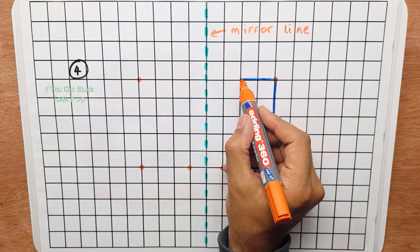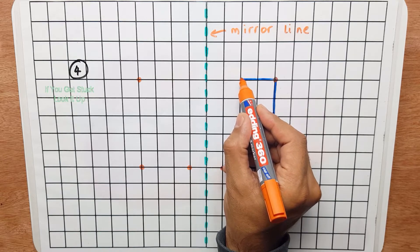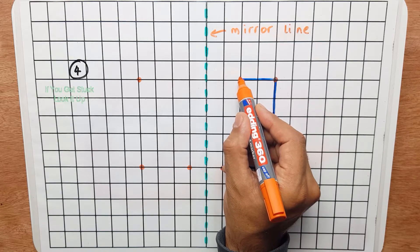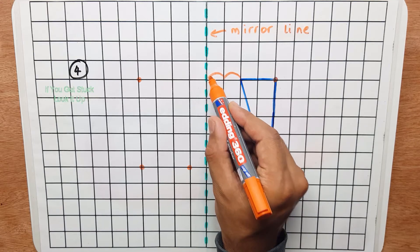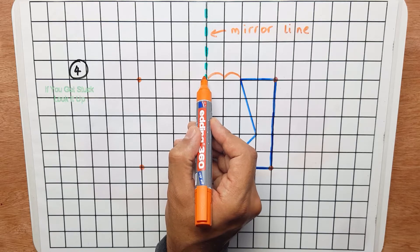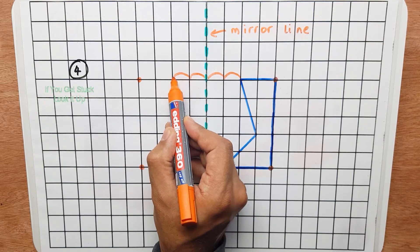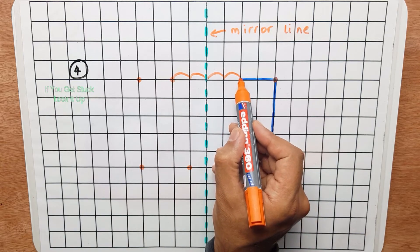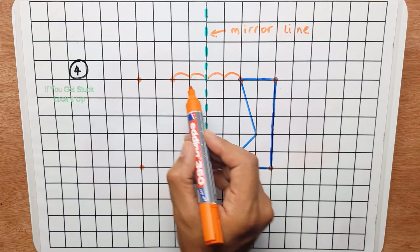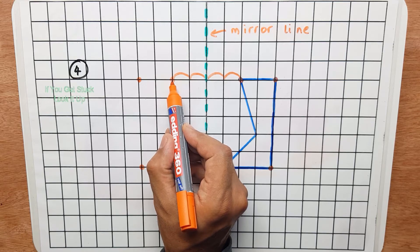Now let's do this fourth vertex or point. So from here I jump one, two squares to the mirror line. So now from there I have to jump two. One, two. So I end up here. So this point or this vertex is reflected over here.